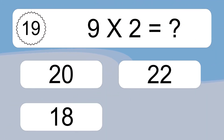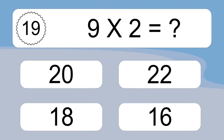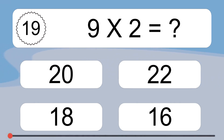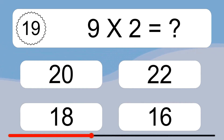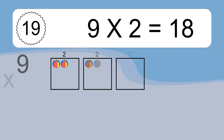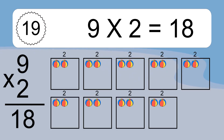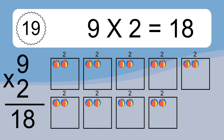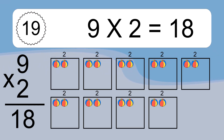9 times 2 equals what? 9 times 2 equals 18. We have 9 boxes and each box has 2 colorful balls inside. If you count all the balls in all the boxes together, you will have 9 times 2 balls. This equals 18 balls.